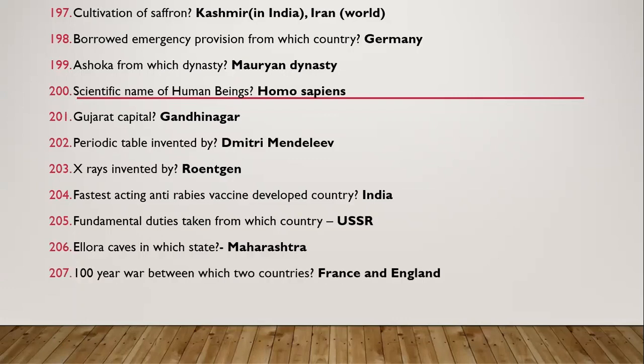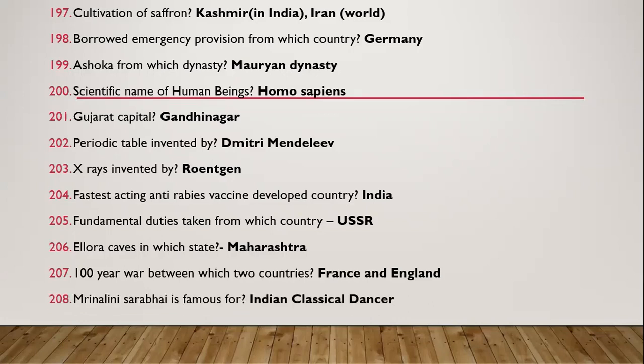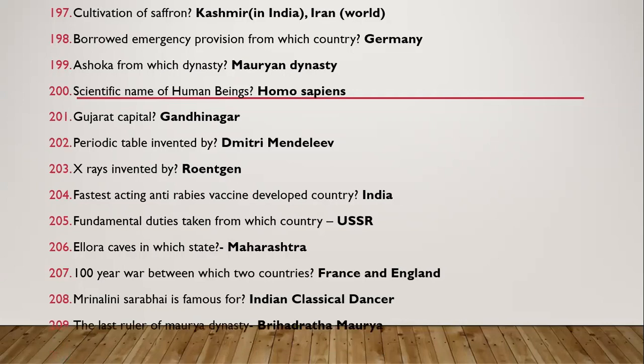Question 200: 100 Years' War — between which two countries? The countries were France and England. Question 201: Last ruler of the Mauryan dynasty — Brihadratha Maurya.